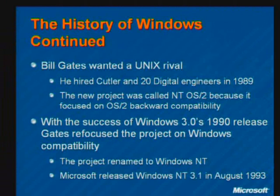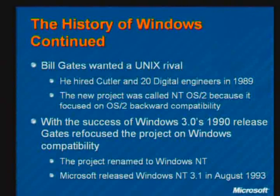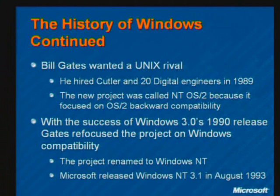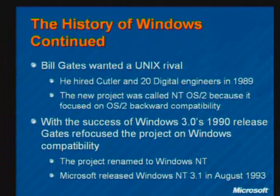David Cutler, somewhat discouraged, was looking around at other opportunities, and that's where Microsoft comes into play. Bill Gates, seeing that Dave was probably disenchanted with Digital, invited him over — conveniently just down the street — and hired Cutler and 20 engineers from the DEC West facility. Some of those were hardware engineers, and that's actually where the Microsoft hardware division sprang from. The new project Bill had assigned Dave to work on was called NTOS2 — New Technology OS2 — because Microsoft was partners with IBM at the time and wanted to make a robust version of the OS2 operating system that they would own.